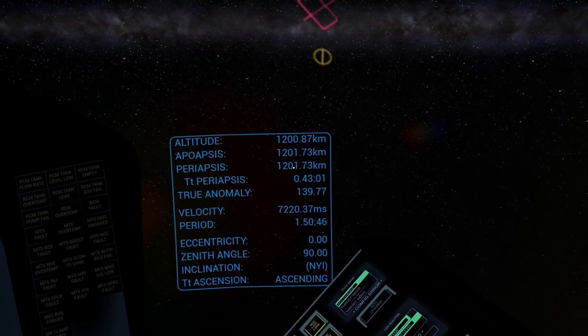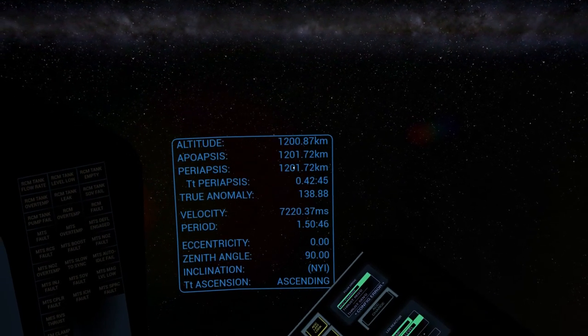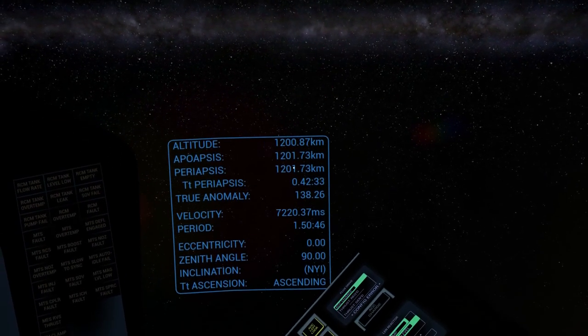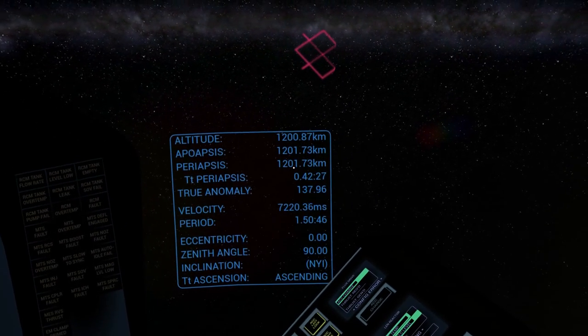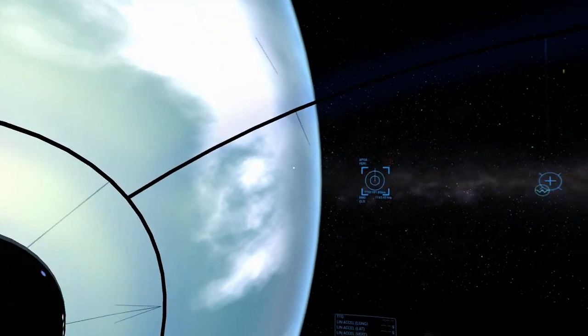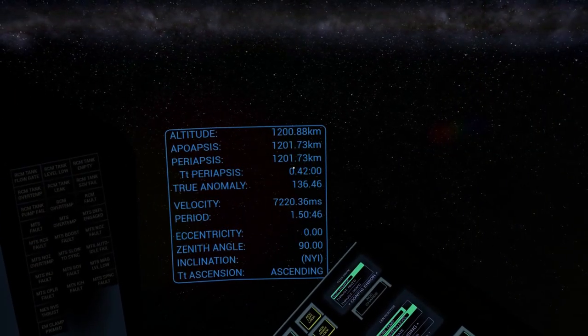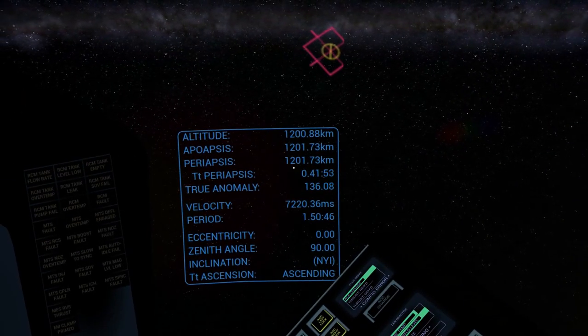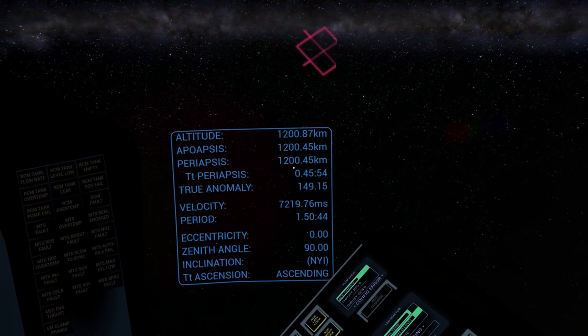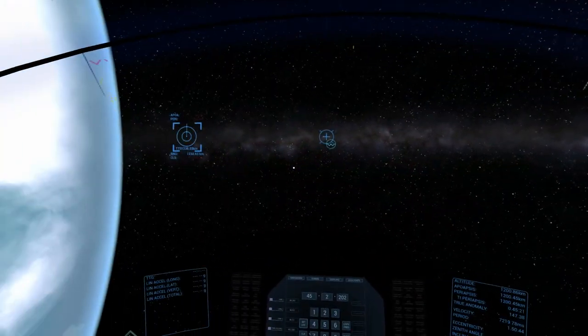And, well, our current altitude doesn't really match neither apoapsis nor periapsis, so either of these numbers are wrong. But whichever way, we have something which is as close to a circular orbit as we can get, actually, now. Just as I promised, I hope this scan right now looks better, like at 1,200 kilometers altitude. There you go.